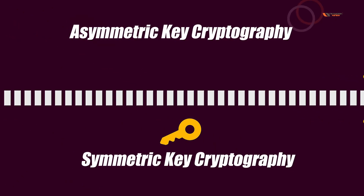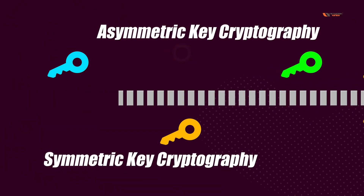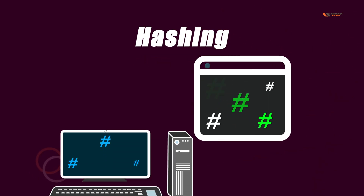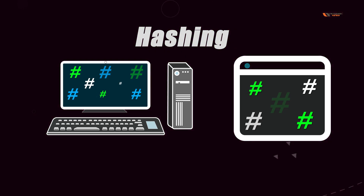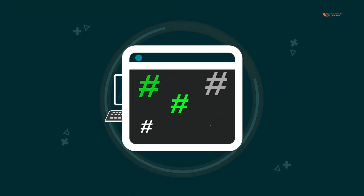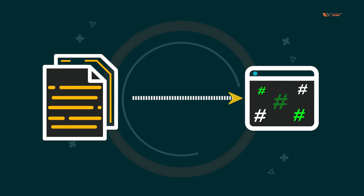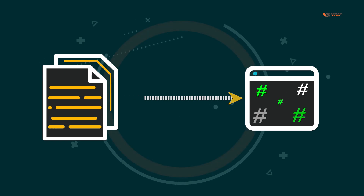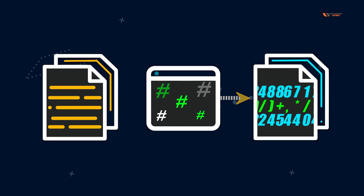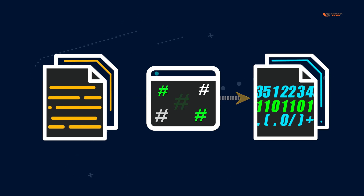Symmetric key cryptography has only one key, whereas asymmetric key cryptography has two keys: a public key and a private key. Hashing is a technique similar to cryptography but works differently. Hashing involves the use of a mathematical function through which any input of any size — whether it's 10 bits, 20 bits, or 150 bits — is converted into a fixed-size output.